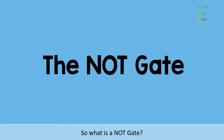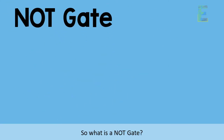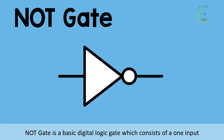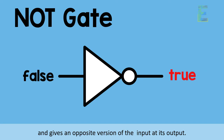So what is a NOT-GATE? A NOT-GATE is a basic digital logic gate which consists of one input and gives an opposite version of the input at its output.